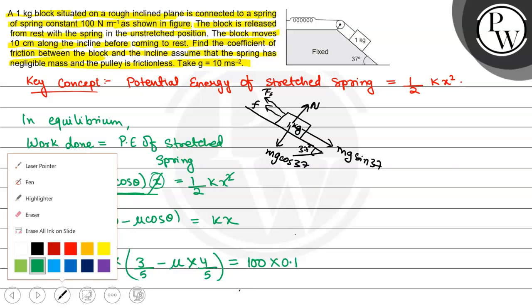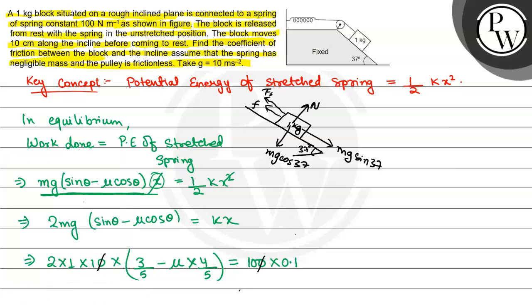We will solve this. On solving, we get 6 by 5 minus 8 mu by 5.